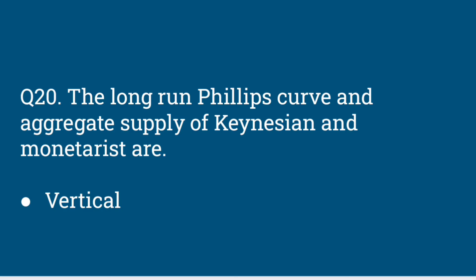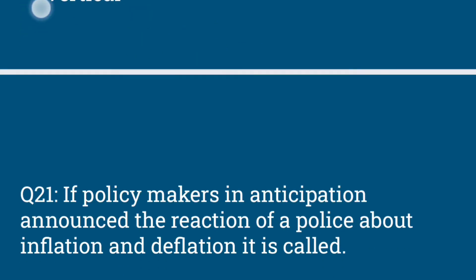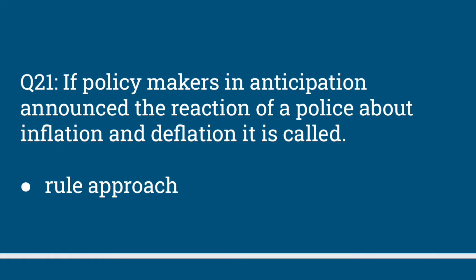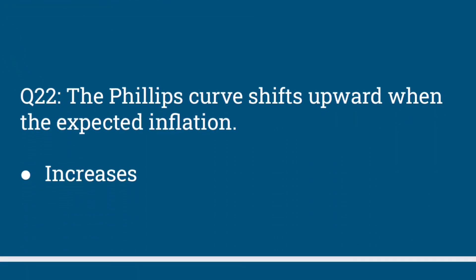If policymakers in anticipation announce the reaction of a policy about inflation and deflation, it is called the rule approach. The Phillips curve shifts upward when expected inflation increases.